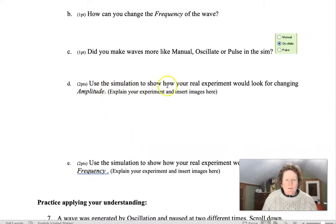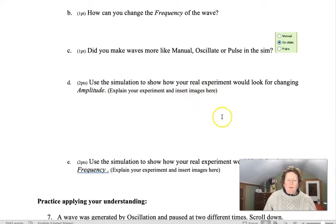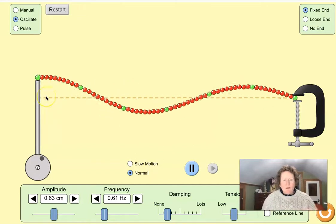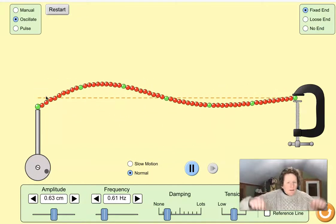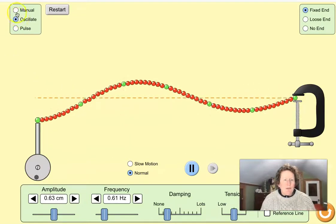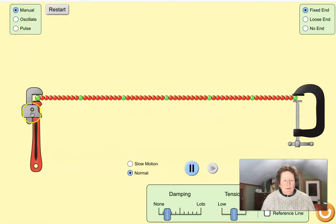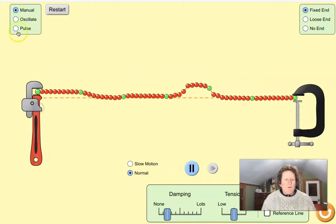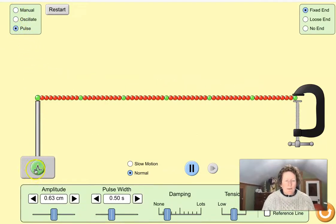Question D is use the simulation to show how your real experiment would look for changing amplitude. So did you make waves like an oscillator? Were you constantly making waves in your sheet or blanket? Or did you make waves like a manual? Or did you pulse waves like this?